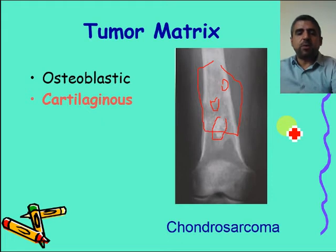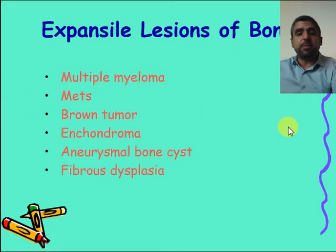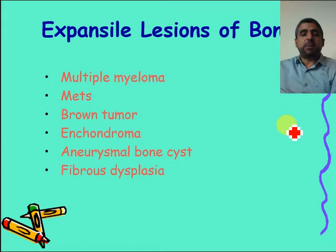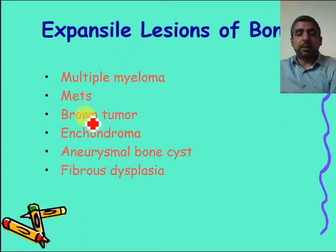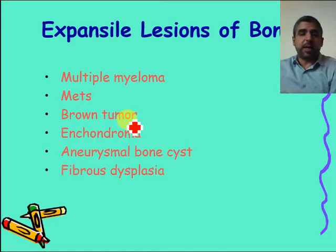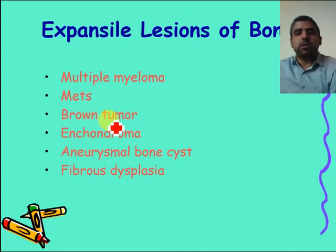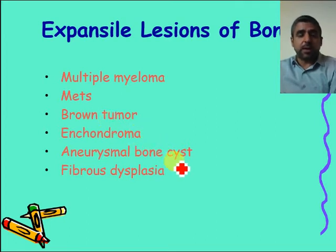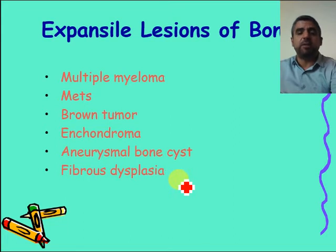These are the kinds of clues to look for in the tumor matrix. Regarding expansile lesions of bones, the most common ones are multiple myeloma, metastasis, brown tumor — which is not a real neoplastic process but related to hyperparathyroidism — enchondromas, aneurysmal bone cysts, and fibrous dysplasia. All of these are expansile lesions of the bone.